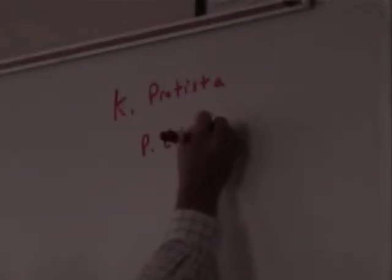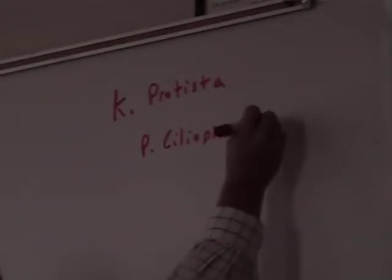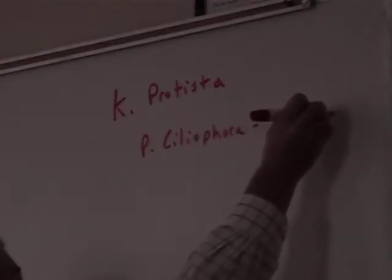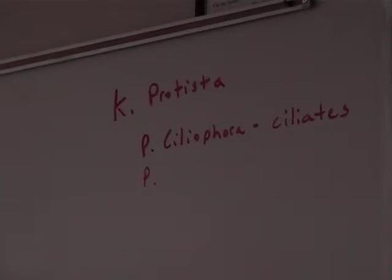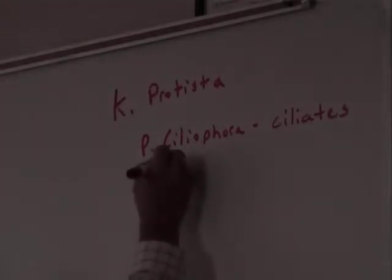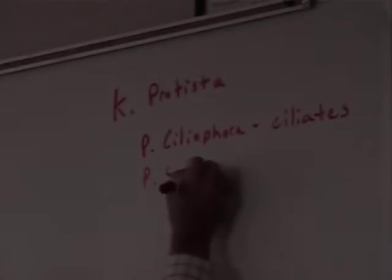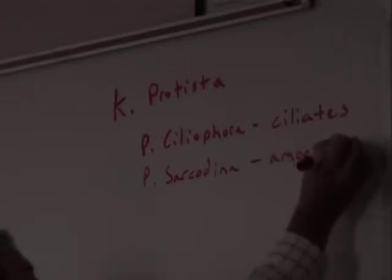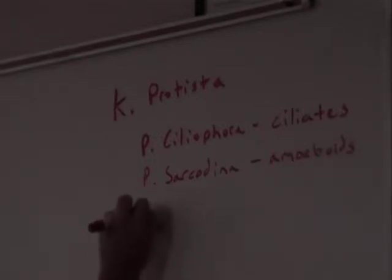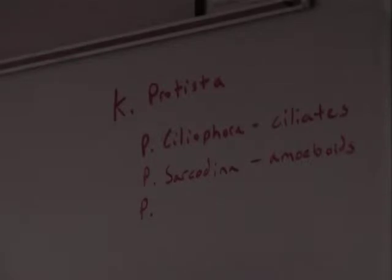Phylum Ciliophora — those are your ciliates. An example of a ciliate is a paramecium. Phylum Sarcodina are your amoeboids. An example of an amoeboid is an amoeba. We looked at amoebas.